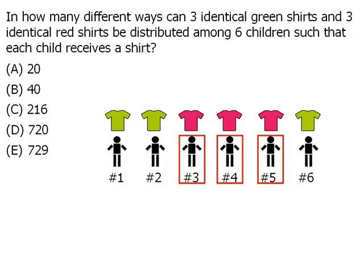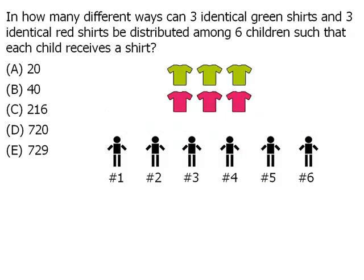As you can see, each new selection of three children will correspond to a new distribution of the six shirts. So our question becomes: in how many ways can we choose three children from these six children?